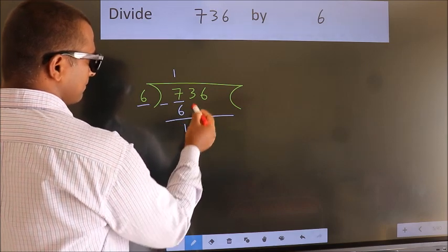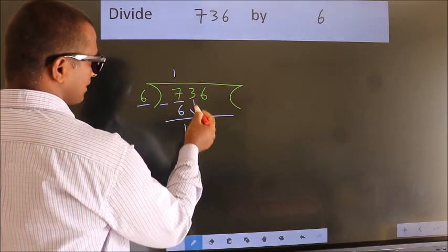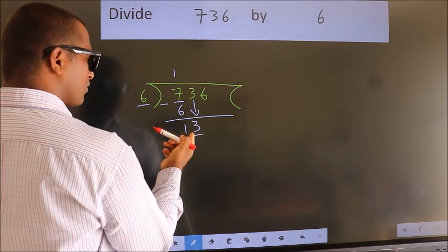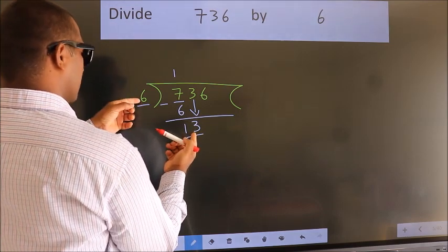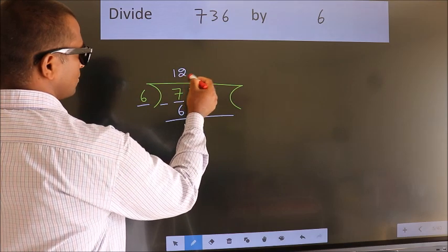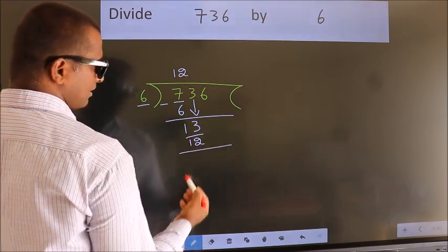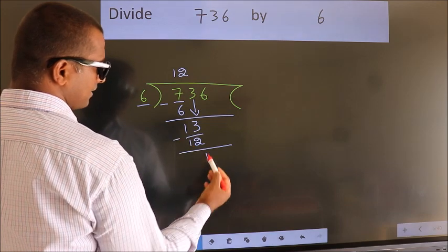After this, bring down the beside number. So 3 down. So 13. A number close to 13 in 6 table is 6 2s are 12. Now we subtract. We get 1.